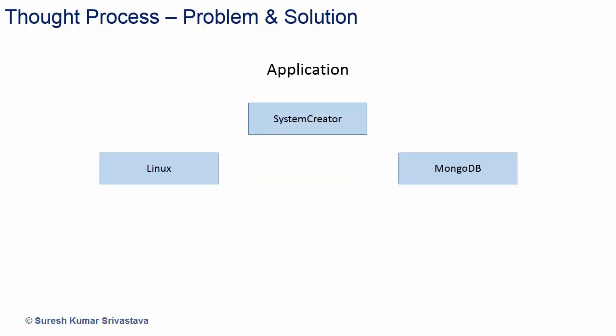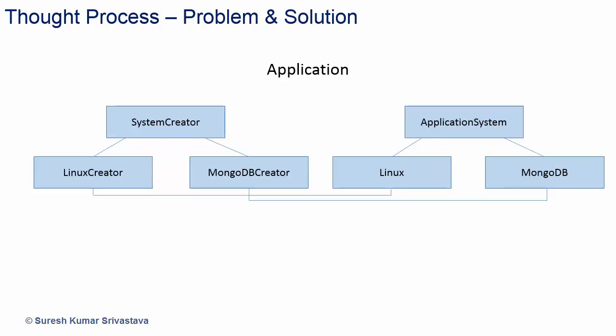Let's stick to Linux and MongoDB only. Suppose it's a framework — then how will it know about Linux and MongoDB, as they are specific to the application, while the system creator belongs to the framework? We can have system creator and application system in the framework. Linux creator and MongoDB creator will be provided by the application and inherited from system creator.